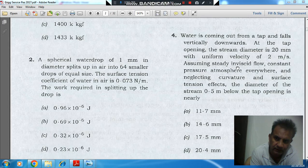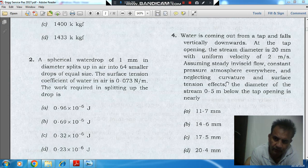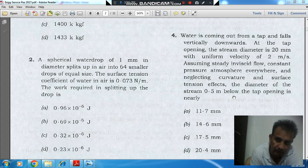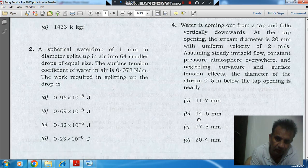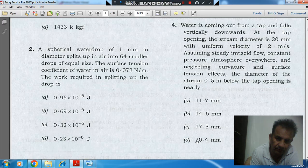Assuming steady inviscid flow, constant pressure atmosphere everywhere, and neglecting curvature and surface tension effects, the diameter of stream 0.5 meter below the tap opening is nearly: option A 11.7 mm, option B 14.6 mm, option C 17.5 mm, and option D 20.4 mm.